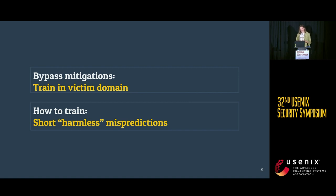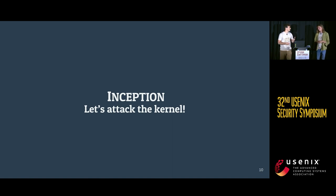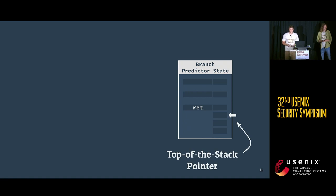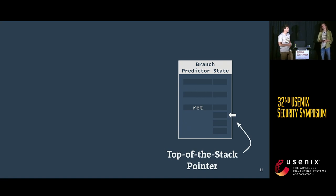So, with this, let's look at how we can actually attack the kernel. The branch predictor acts as a lookup table for various branch types such as jumps or calls, but for returns we have a dedicated structure — a circular stack with a top-of-stack pointer. Whenever we encounter a call, we push the return target onto this stack, and whenever we encounter a return, we pop from it.